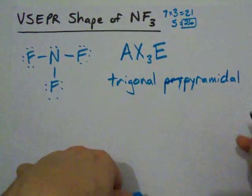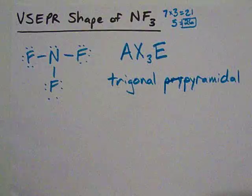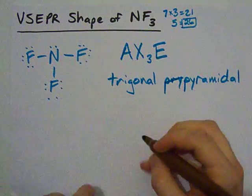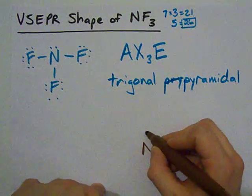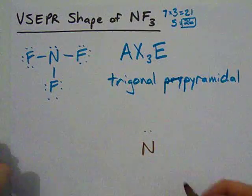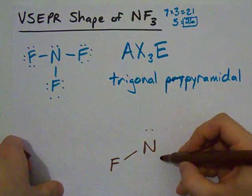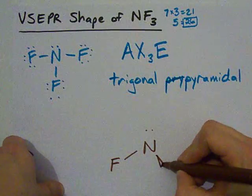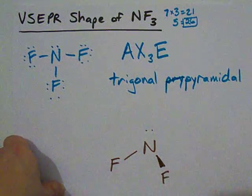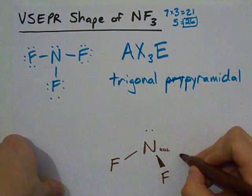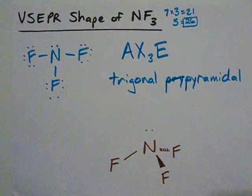And let me draw you the 3D structure just to show you how it's actually shaped. We've got our N in the center, our lone pair sitting there, and a fluorine sticking out. Now, three-dimensionally, you have an F that's also pointed out towards you, and another F that's pointed away from you.